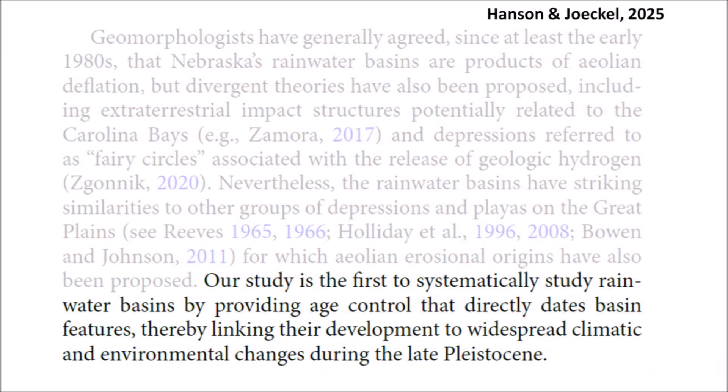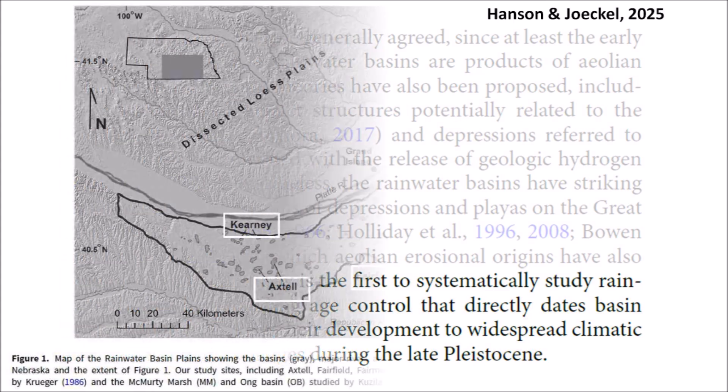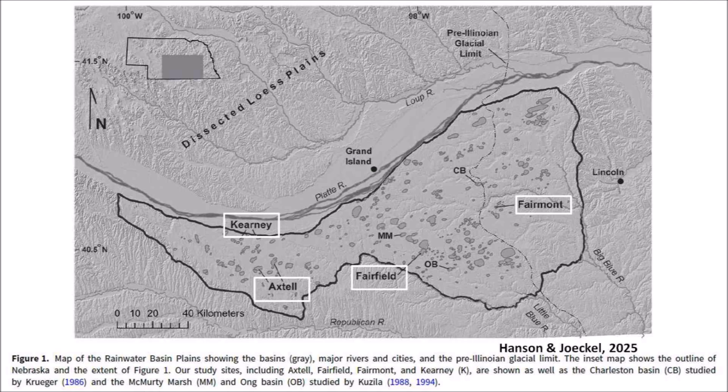Hanson and Jockel say that their study is the first to systematically study rainwater basins by providing age control that directly dates basin features, thereby linking their development to widespread climatic and environmental changes during the late Pleistocene. Figure 1 of the paper has a map of the rainwater basin plains showing the basins, major rivers and cities, and the pre-Illinois glacial limit. The map also identifies the location of the four areas of study: Kearney, Axtell, Fairfield, and Fairmont.